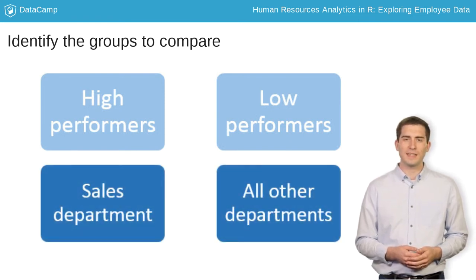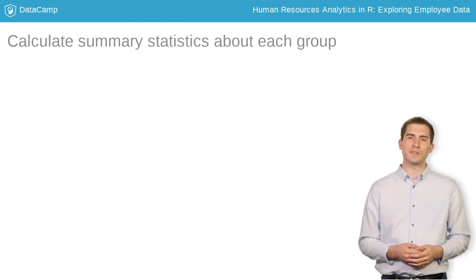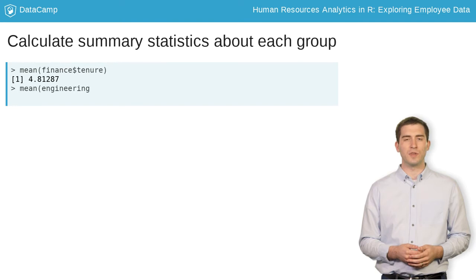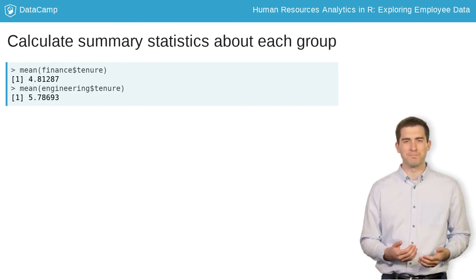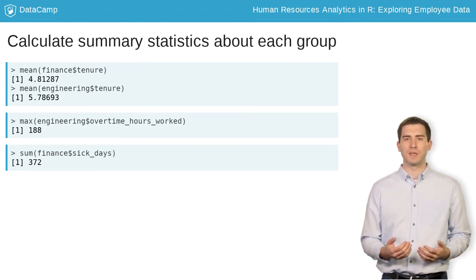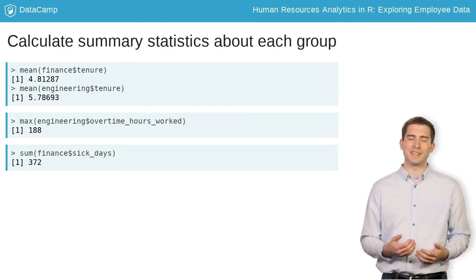Next, calculate summary statistics for the groups. Examples of summary statistics include the mean or median, such as average employee tenure, the maximum or minimum, or the sum, such as the total number of sick days taken.